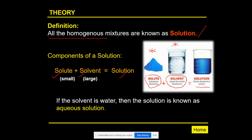For example, seawater is a solution — it has water as the solvent in large quantity and salts as the solute. Even air is a solution: air has about 70% nitrogen as the solvent, and the remaining ~22% includes oxygen, carbon dioxide, which are considered the solutes.